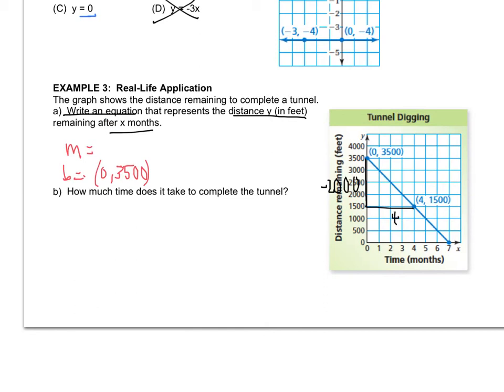So the slope is negative 2,000 over 4, which as a regular number—I mean you could leave it like that, it just looks bizarre—would be 500, so negative 500. You can put negative 500 over 1, but nobody really does that. So the formula is y equals negative 500x plus 3,500.